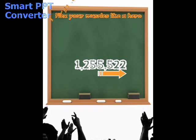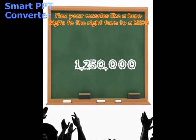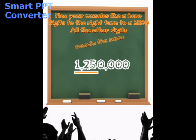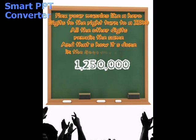Flex your muscles like a hero. Digits to the right turn to a zero. All the other digits remain the same. And that's how it's done in the rounding game, yo.